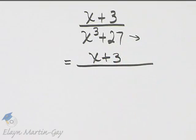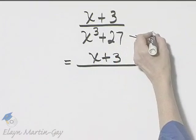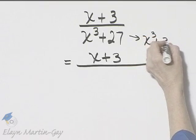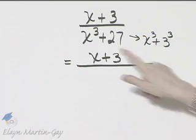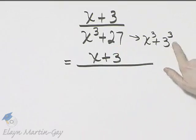By the way, remember I always like to take that intermediate step of writing each term as a cube. Do you agree that x cubed is of course x cubed and 27 is 3 cubed?